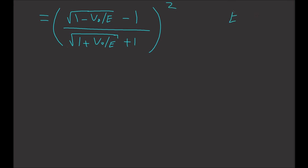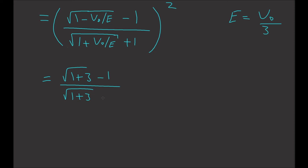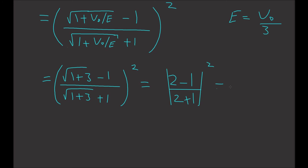Recalling that E equals V0 over 3, so V0 over E equals 3, and substituting this in, we get the square root of (1 plus 3) minus 1, divided by the square root of (1 plus 3) plus 1, all squared. This gives the reflection probability of 1/9. So for a quantum particle traveling along the x-direction that sees a sudden drop in potential, there is a chance it will reflect back equal to 1/9.